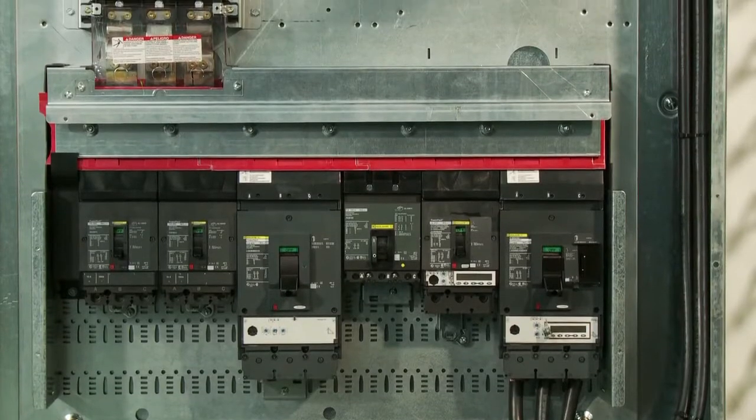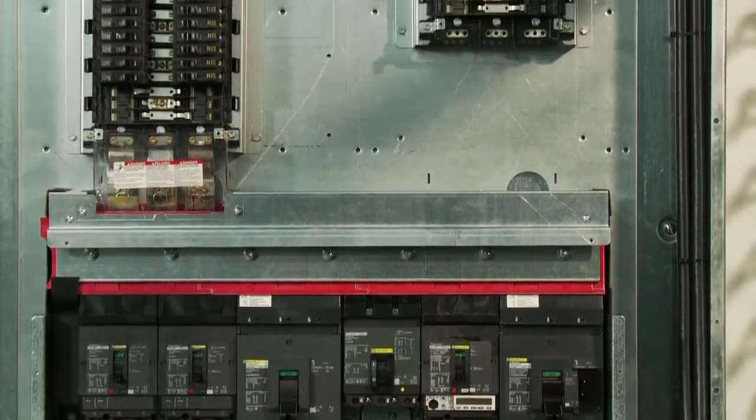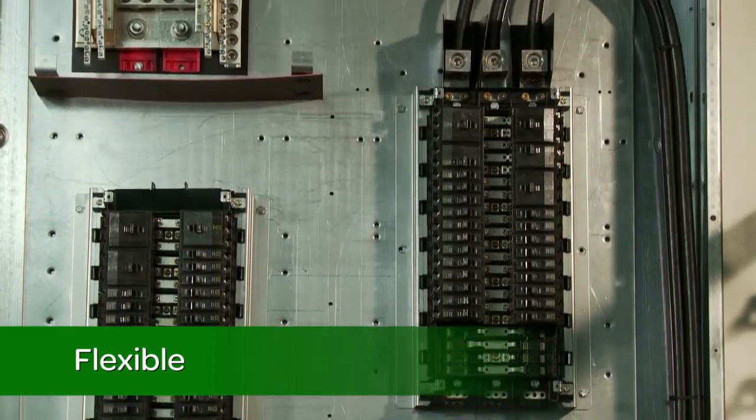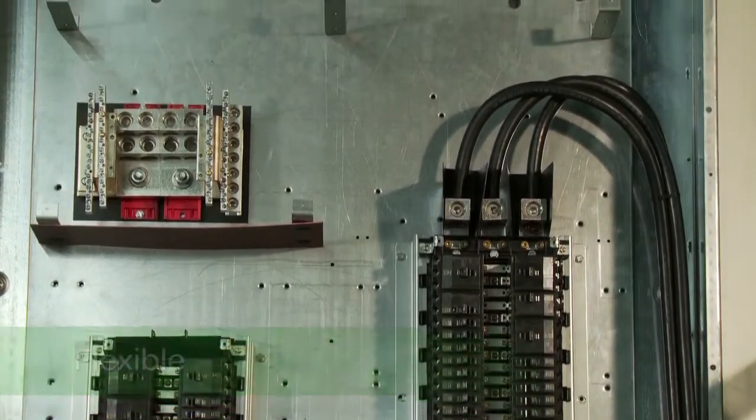The I-Line Combo Panel Board gives you the flexibility to install an interior that has a combination of NQ or NF lighting sections in the same enclosure as an I-Line section.